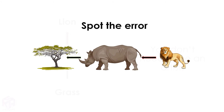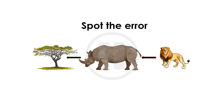Can you spot the error in this food chain? Pause the video now if you need time to look carefully. That's right — the arrows were pointing in the wrong direction. The arrows should always be pointing from the food to the animal that eats that food.